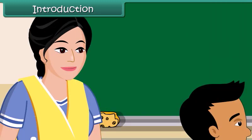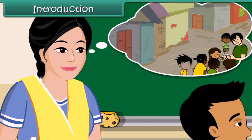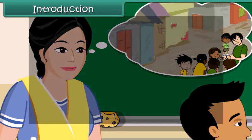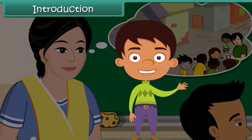Ramesh's mother knows the reason for his absence. They live in a slum area. Ramesh falls ill frequently because of his unhealthy surroundings. However, Ramesh's mother cannot understand how she can improve their surroundings. Let us understand how we can keep our surroundings and ourselves clean.